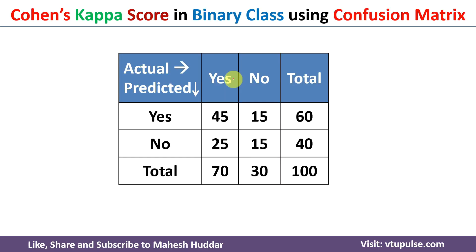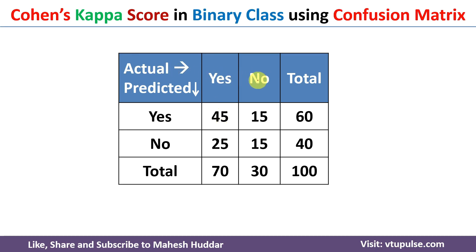Now, coming back to the calculation part of Cohen's kappa score — let us assume we have been given a confusion matrix for a binary class classification problem. The question is how to calculate the Cohen's kappa score. First, we understand how to interpret this confusion matrix. You can see the actual yes and actual no classes, and the predicted yes and no classes.